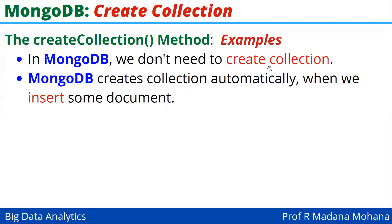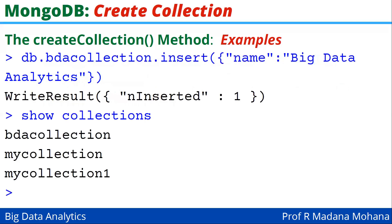In MongoDB, we don't necessarily need to create a collection explicitly — MongoDB creates a collection automatically when we insert a document. Earlier during the create database lecture, we demonstrated the insert statement, where db.student1.insert() automatically created the student1 collection. Similarly, using db.BDAcollection.insert({ name: 'Big Data Analytics' }), it shows write result with inserted count 1. Running show collections confirms that BDAcollection is now automatically available.